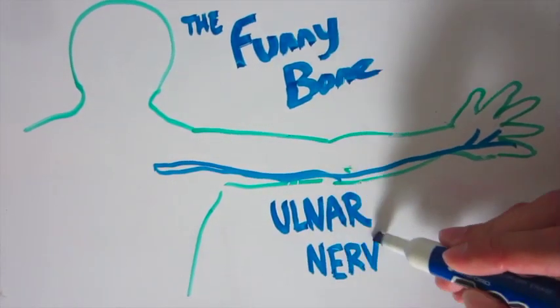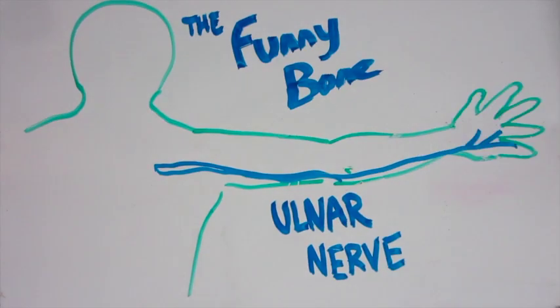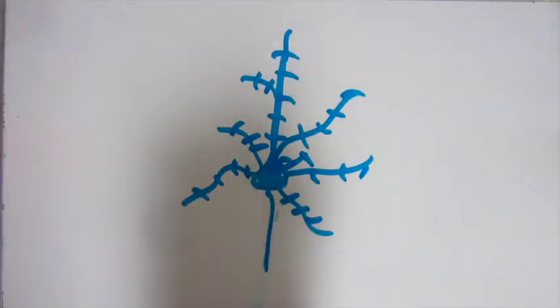People call it the funny bone, but it's actually a nerve. You probably know that nerves are the body's data cables, but to really understand what's going on here, we're going to have to talk about the cells that make them up: neurons.